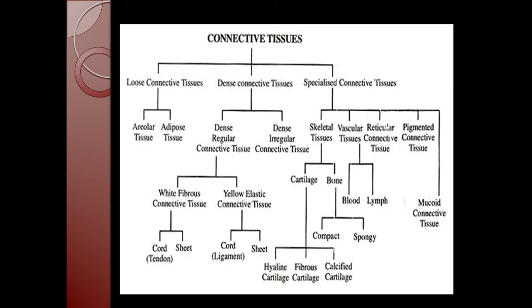The connective tissues are classified into three types: loose connective tissue, dense connective tissue, and specialized connective tissue. Loose connective tissue is further classified into areolar and adipose tissue. Dense tissue is classified into dense regular and dense irregular connective tissue. Dense regular connective tissue is further classified into white fibrous connective tissue, which includes cord and sheet, and yellow elastic connective tissue, which includes ligament and sheet.